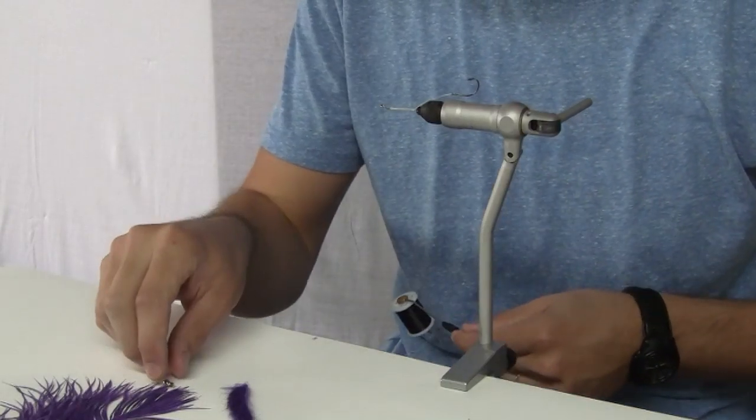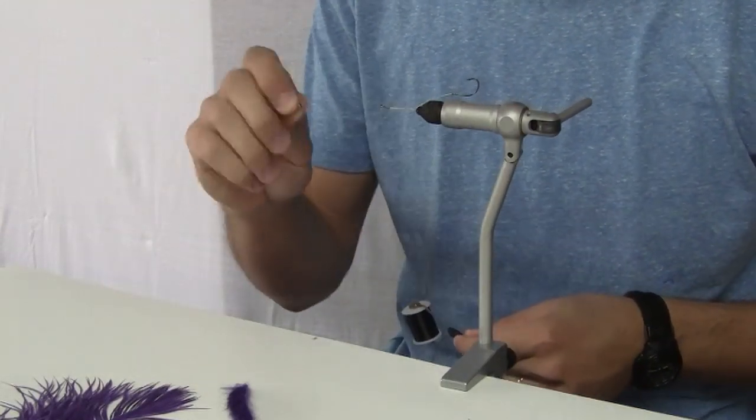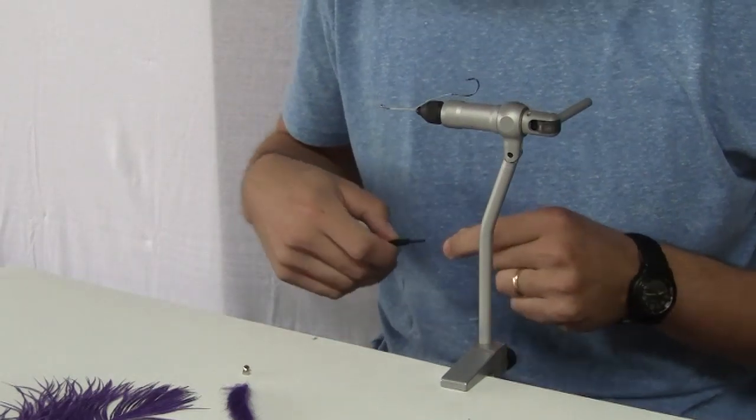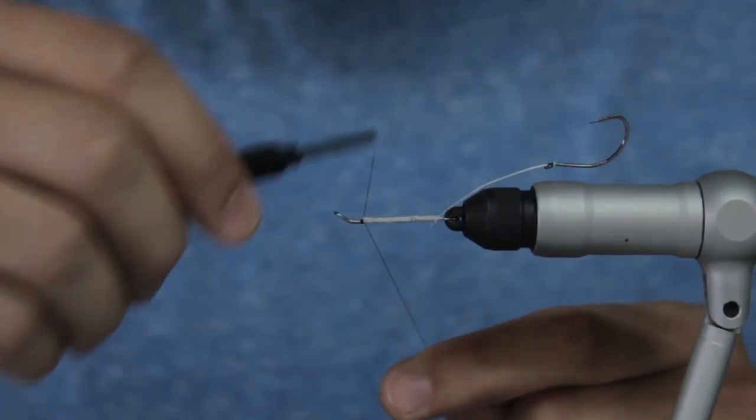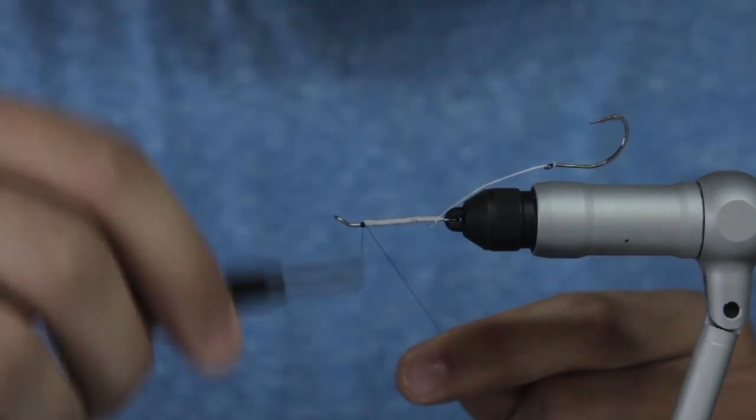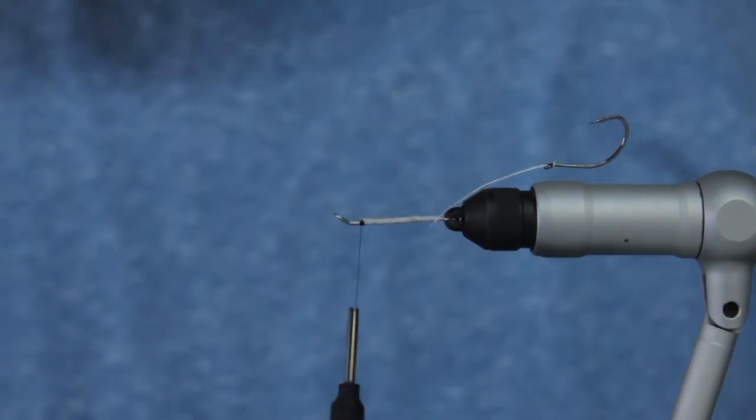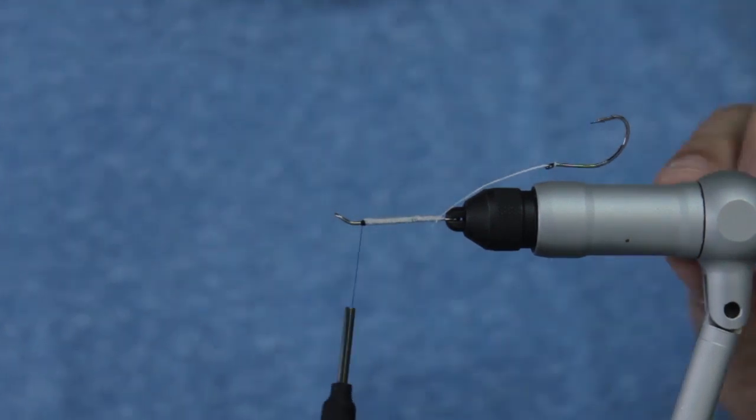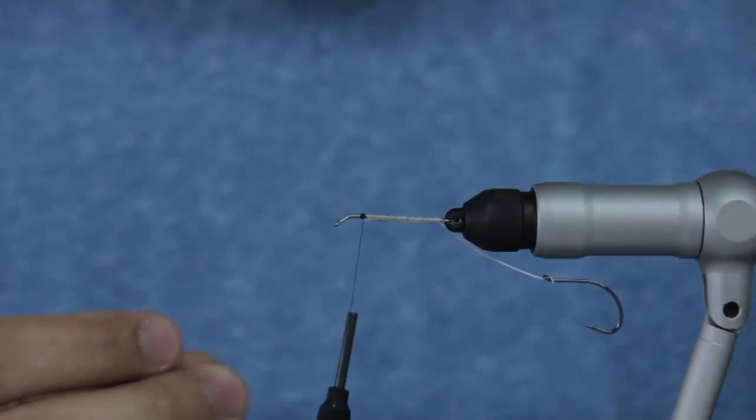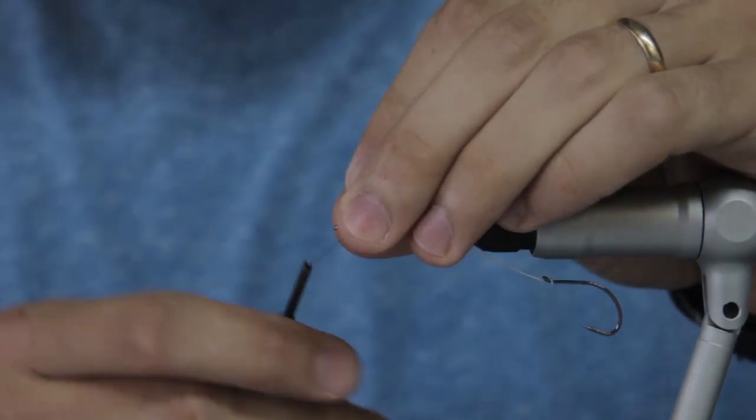We're going to add on some 5/32 nickel plated dumbbell eyes. We're going to add a little bit of thread from this thread off. We're gonna apply these eyes on the underside of the shank.